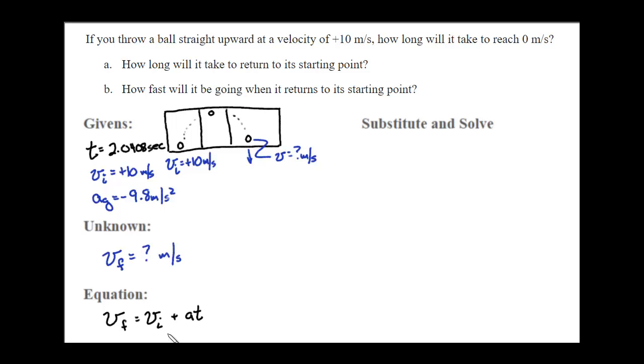I don't know what final velocity is, so I'm going to look for final velocity equals initial velocity plus 10 plus negative 9.8 times 2.0408. Velocity final equals...